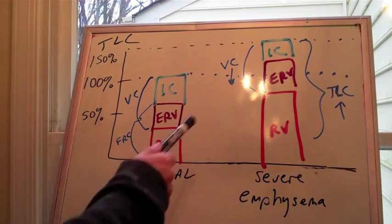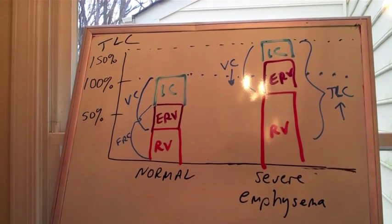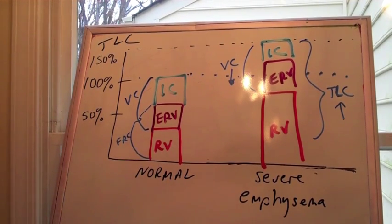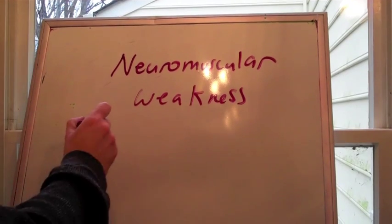Now, how about for COPD? With air trapping, your total lung capacity could be 150% of normal, as you can see. Your vital capacity may still be low, however. And that's what we refer to as pseudo-restriction.